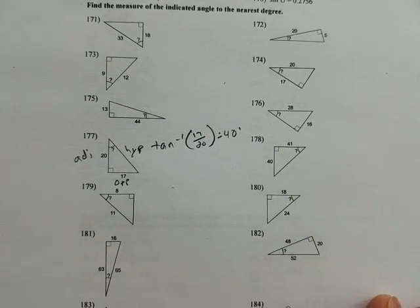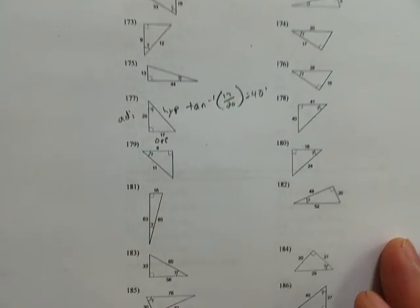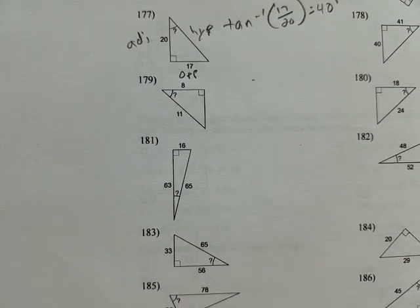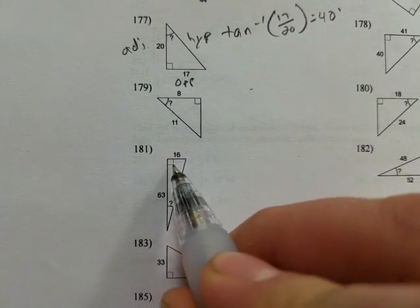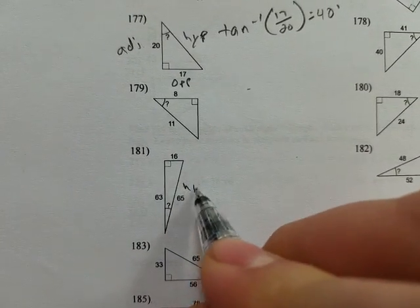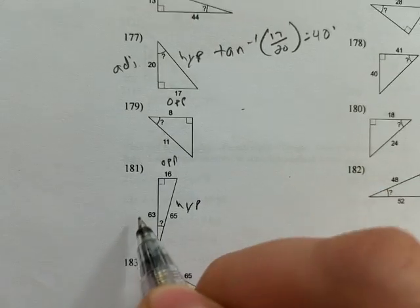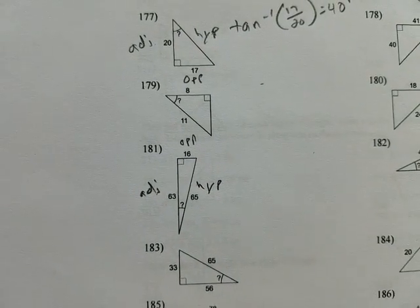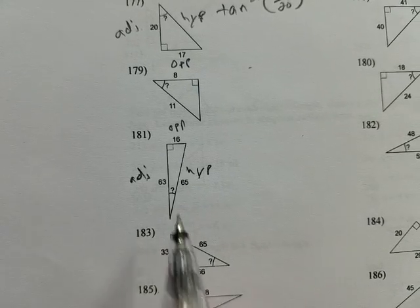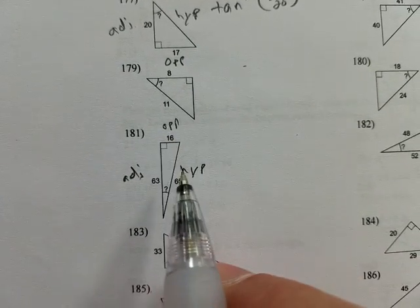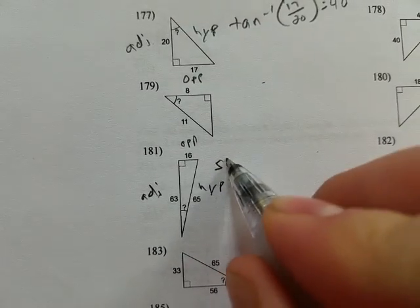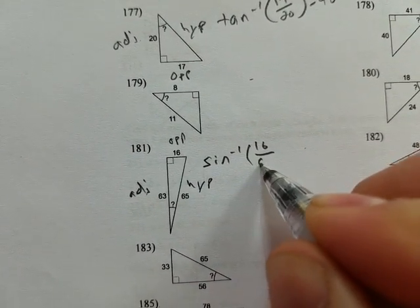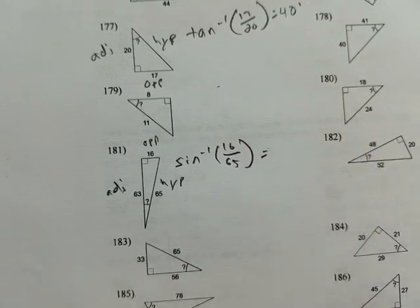Now if we look at another one, let's look at 181. 181 gives you all of the sides, so I'm still going to do the same things. I'm still going to say right angle here, hypotenuse here, opposite up here, and adjacent here. So I actually get to pick what two I want to use. Now I'm going to do a sine problem, so I want to do opposite and hypotenuse. So inverse sine of 16 over 65 equals the angle.